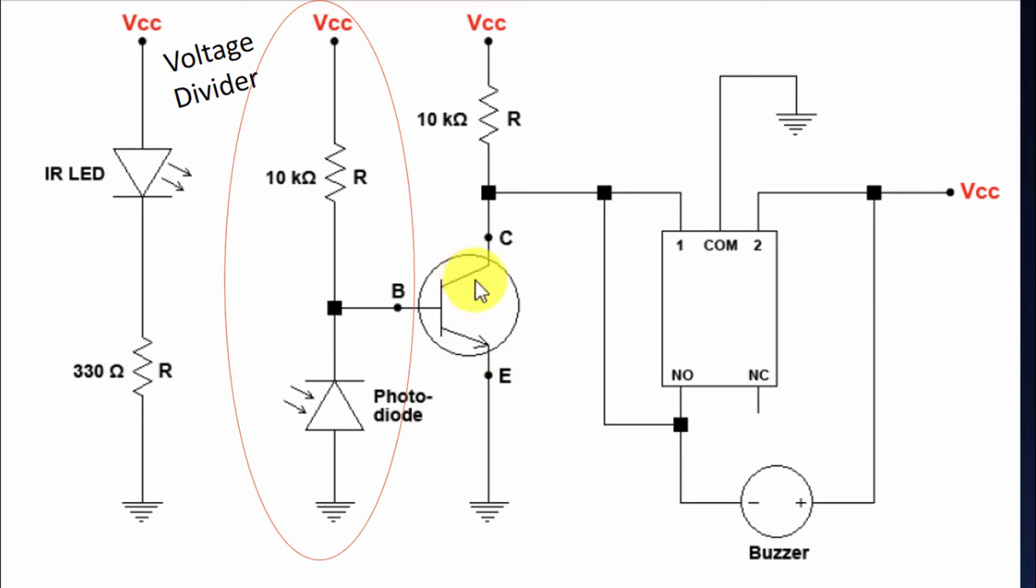It will start conducting. As it starts conducting, the current which is entered here gets split into two parts. This current which will be driven into this loop will activate the relay.